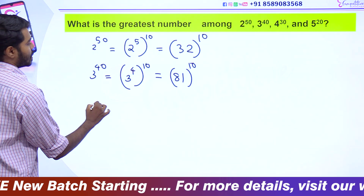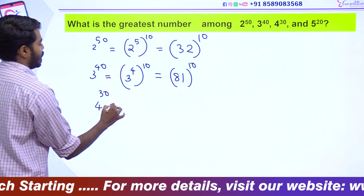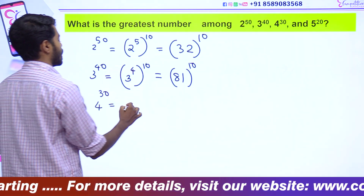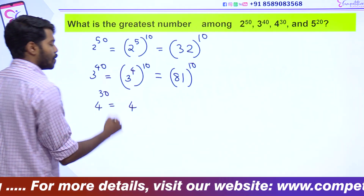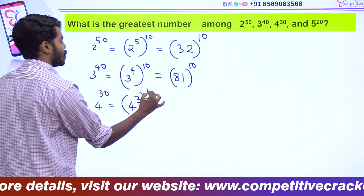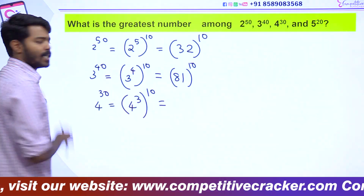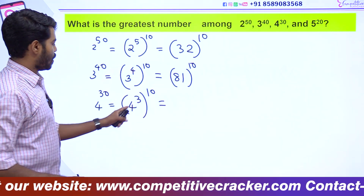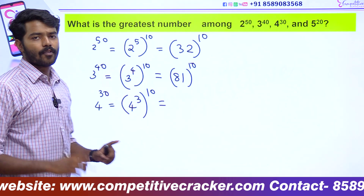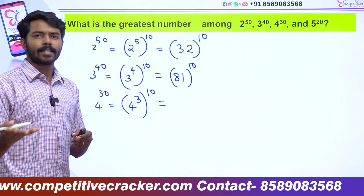4 raised to 30 — we can split it. 4 raised to 3, that is 64 raised to 10.